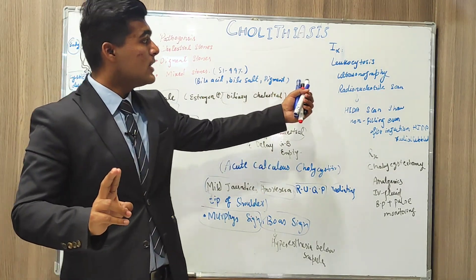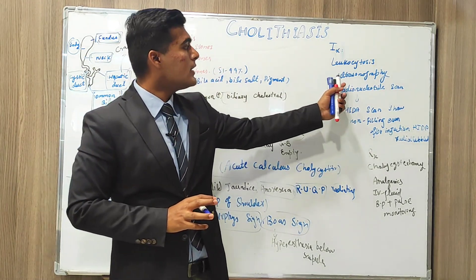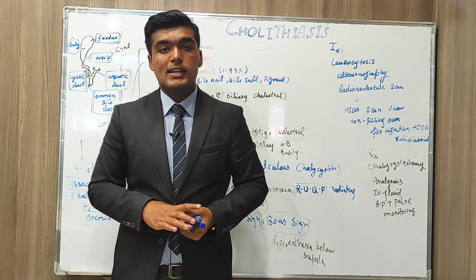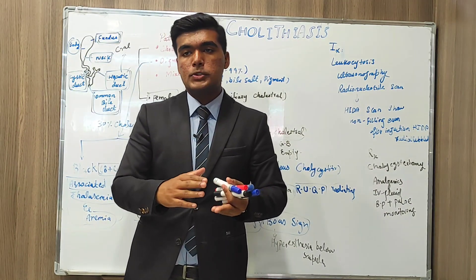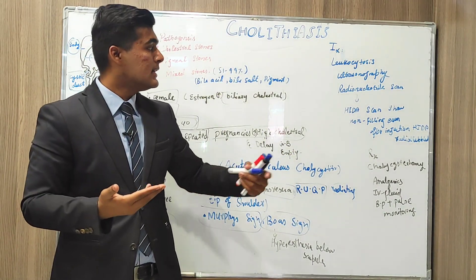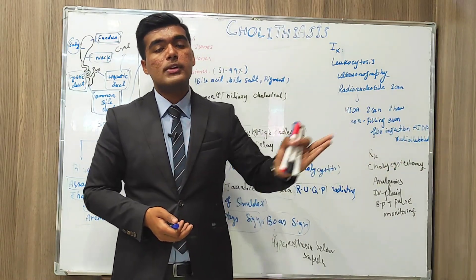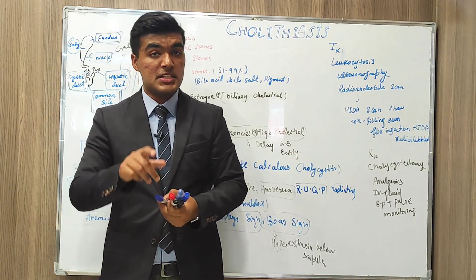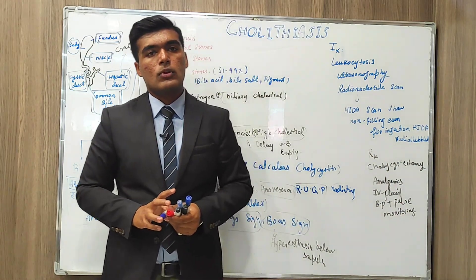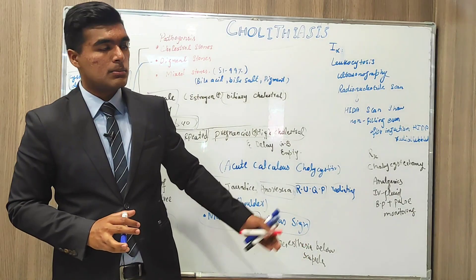For investigations, we look for leukocytosis. Ultrasonography shows the size and location of stones — stones greater than 3 millimeters guide management decisions. A radionuclide scan, including the HIDA scan, shows non-filling of the gallbladder even after injection of the HIDA radionuclide.